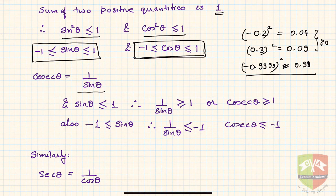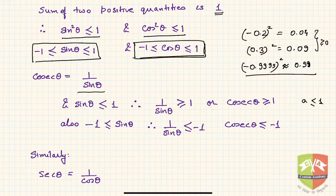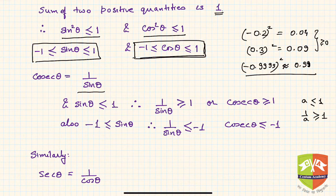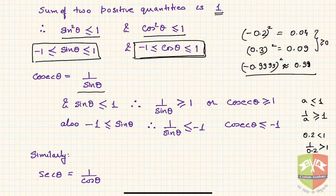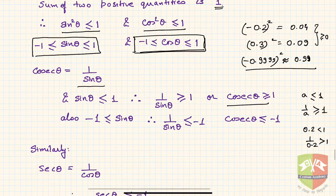Cosecant theta is the reciprocal of sine theta — that is, 1/sinθ. Since sinθ ≤ 1, its reciprocal will always be greater than or equal to one. If any value is less than or equal to one, its reciprocal is always greater. For example, 0.2 is less than one, but 1/0.2 = 5, which is greater than one. So cosecθ ≥ 1.